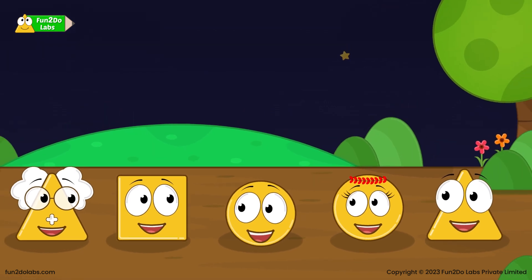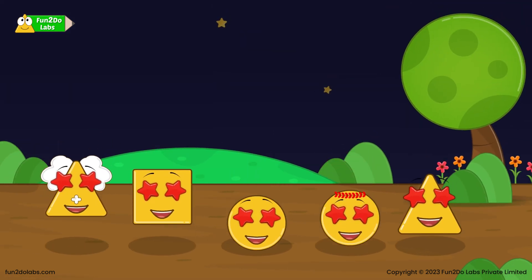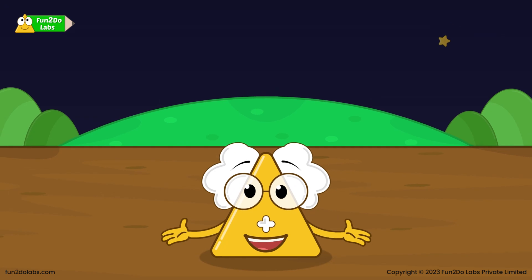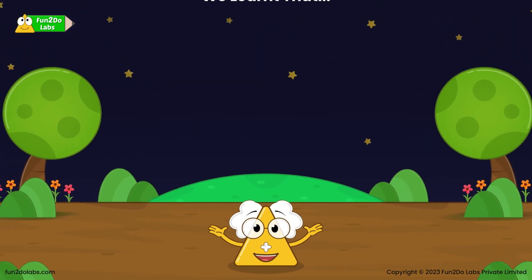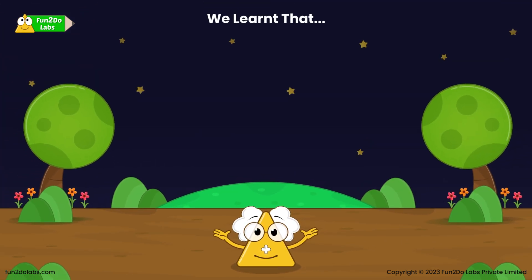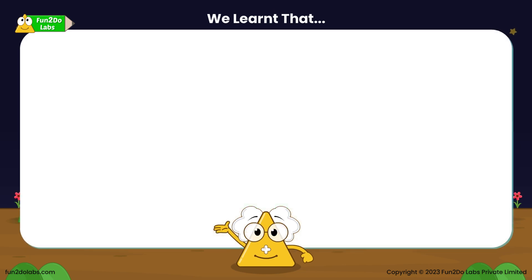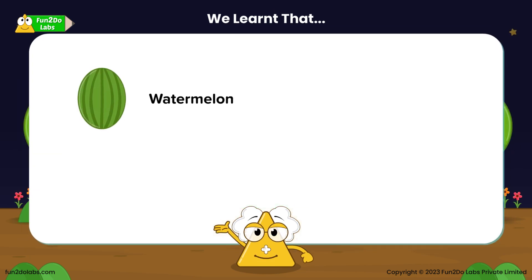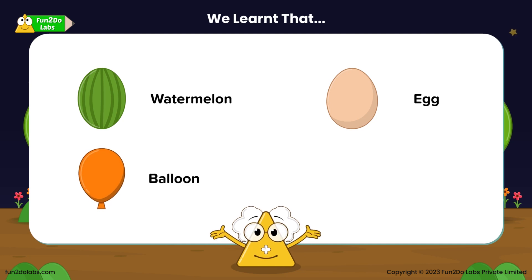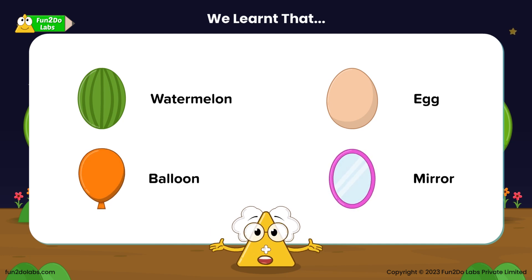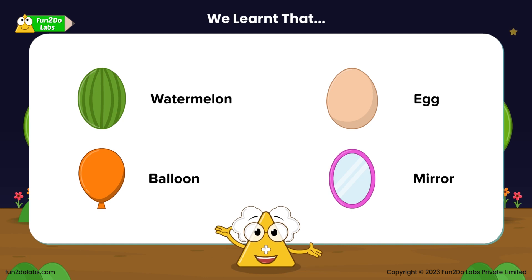I am a circle again! All the kids jump with joy. Today we have learnt about the oval shape. Let us look at a few oval-shaped objects around us: this is a watermelon, this is an egg, this is a balloon, this is a mirror. Have you noticed? These oval-shaped objects look like an elongated circle with no straight sides and no corners. Go and quickly grab a few oval-shaped objects around you!